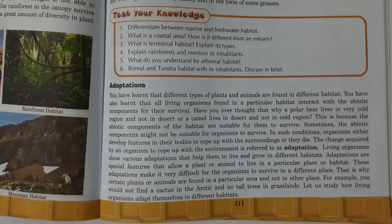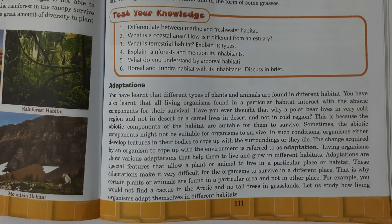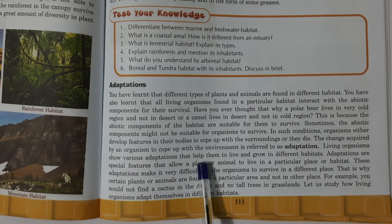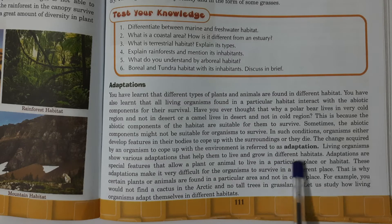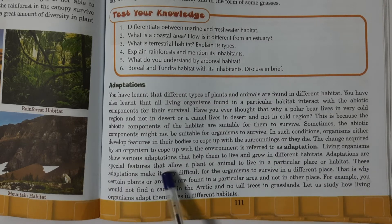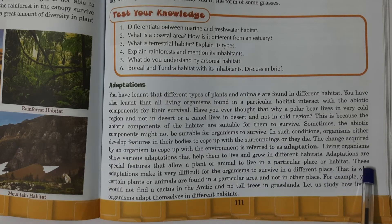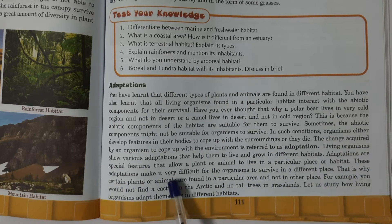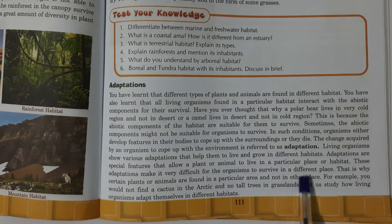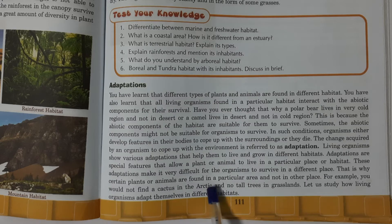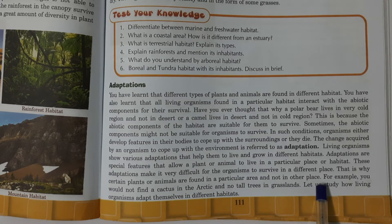These changes that help organisms adjust and cope with the environment are called adaptation. Living organisms show various adaptations that help them live and grow in different habitats. Adaptations are special features that allow a plant or animal to live in a particular place or habitat. These adaptations make it very difficult for the organisms to survive in a different place.